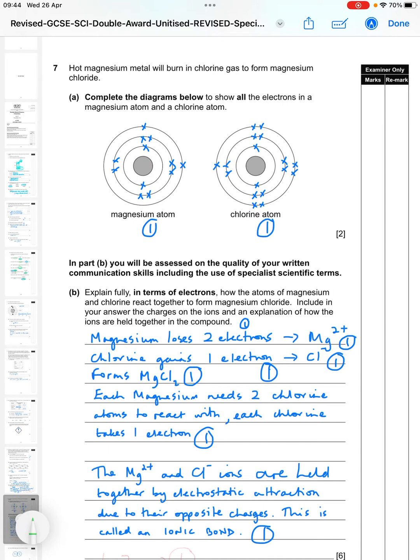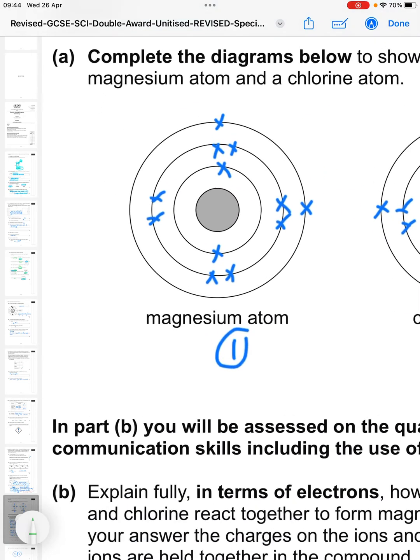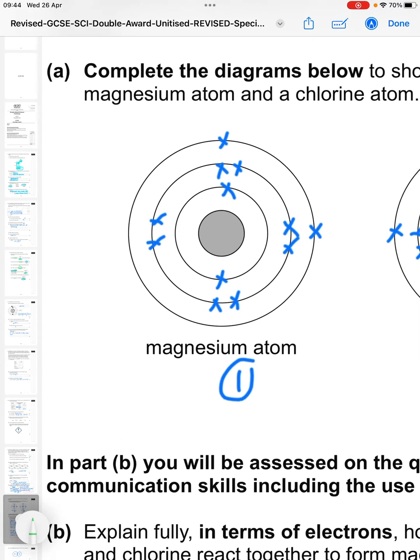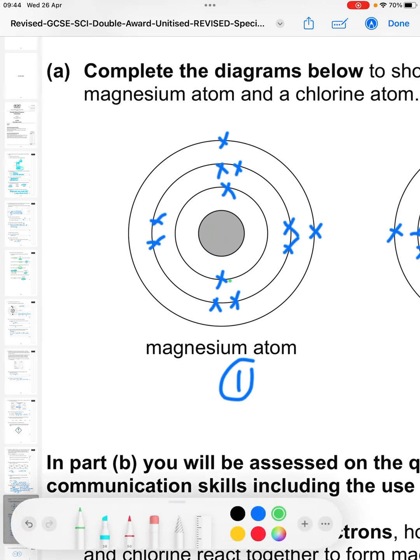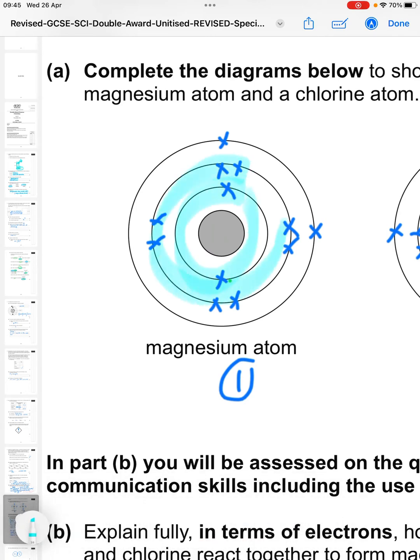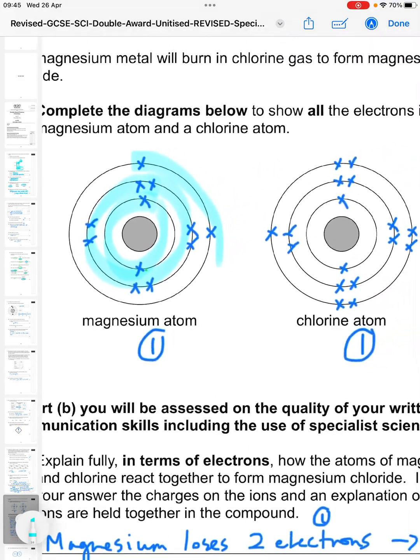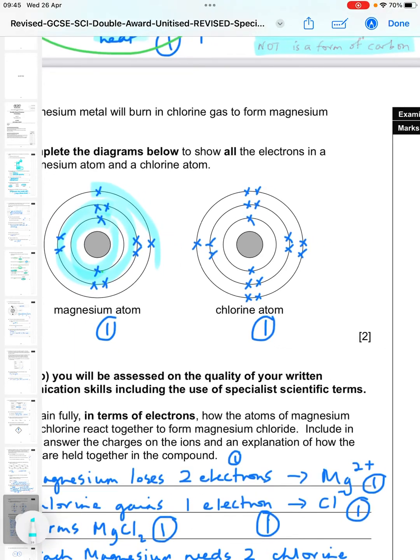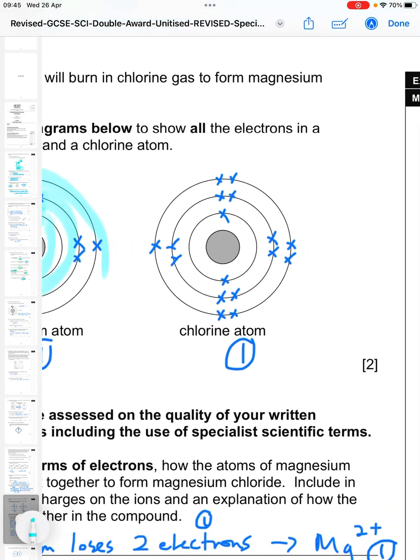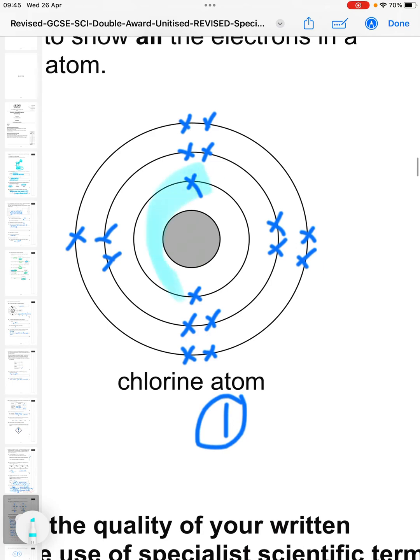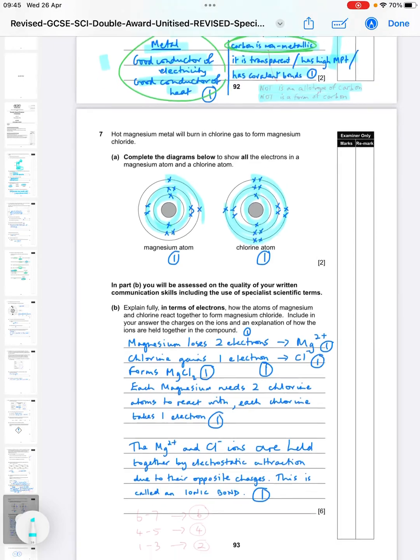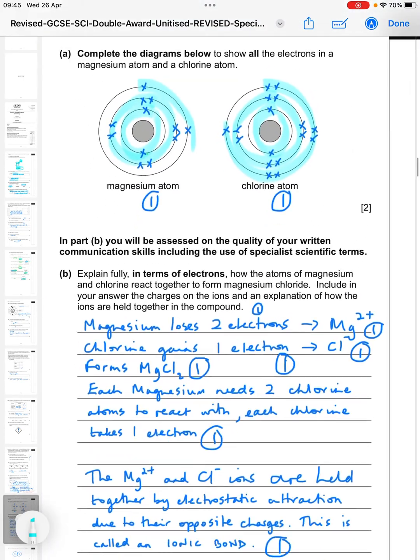Back to the paper. Question 7. Hot magnesium metal will burn in chlorine gas to form magnesium chloride. Complete the diagrams to show all the electrons in a magnesium atom and a chlorine atom. So magnesium, you can use your data booklet to look it up. And there are 12 electrons, so 2 in the first shell, then 8 in the second shell, and then 2 in the outer shell. Remember to try and group those electrons in pairs where possible. It makes it much easier to see and to mark. And then chlorine is 2, 8, and then 7 in the outer shell.